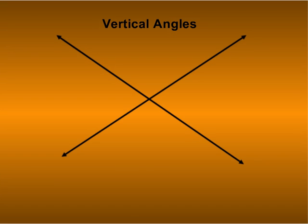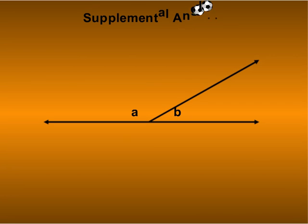Intersecting lines form vertical angles. And vertical angles are equal. And remember that supplemental angles share a line and total 180 degrees.